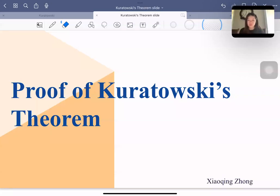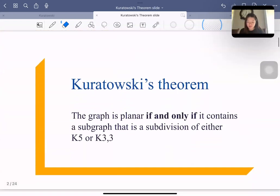Hello, my topic is proof of Kuratowski's theorem. The theorem states a graph is planar if and only if it contains no subgraph that is a subdivision of either K5 or K3,3.